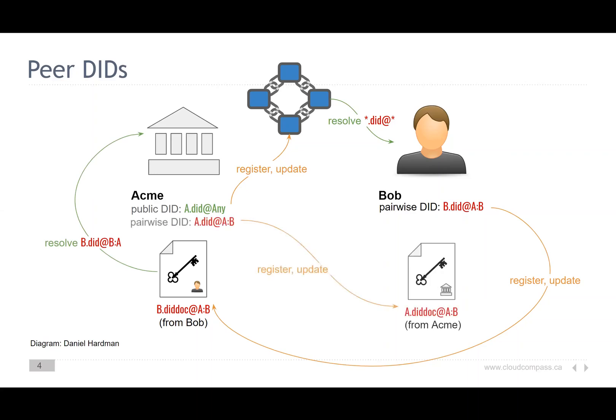Likewise, Acme can create their DID for Bob and give that DID doc to Bob. Bob can now resolve that. And now we have the exact same situation as before, except only Bob and Acme can resolve those two private DIDs — the two DIDs that only they will be using. That's the goal of using the peer DID method and pairwise private DIDs.